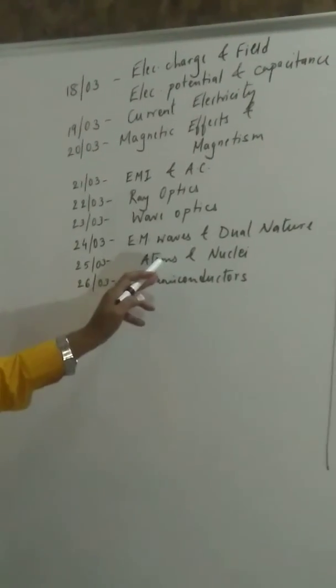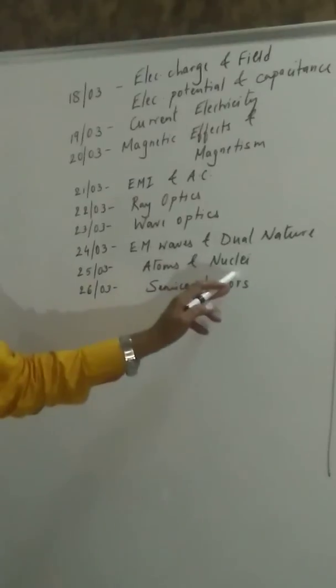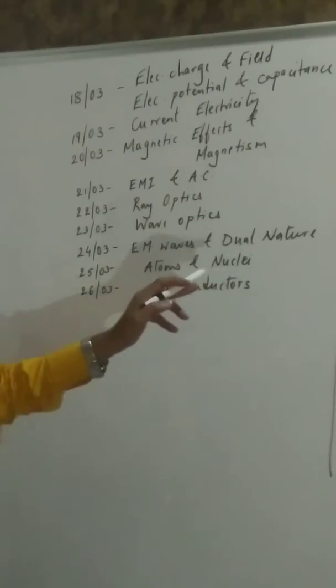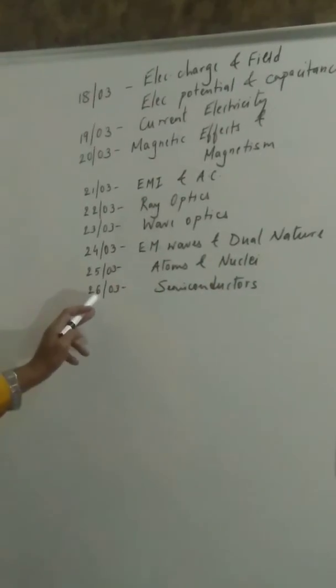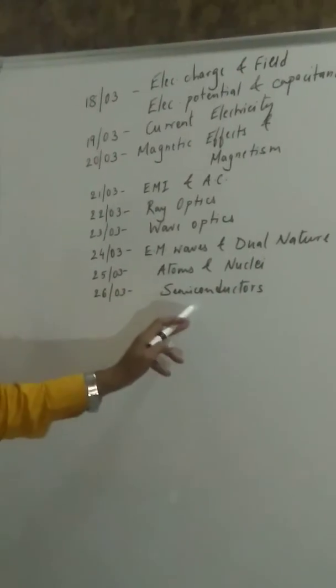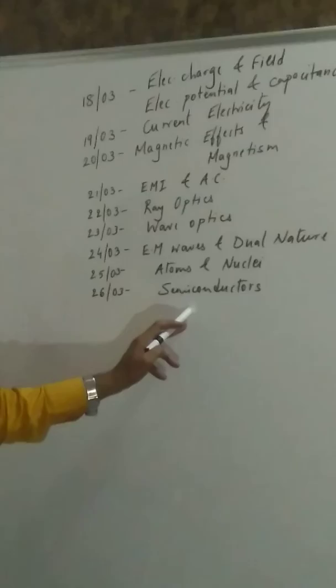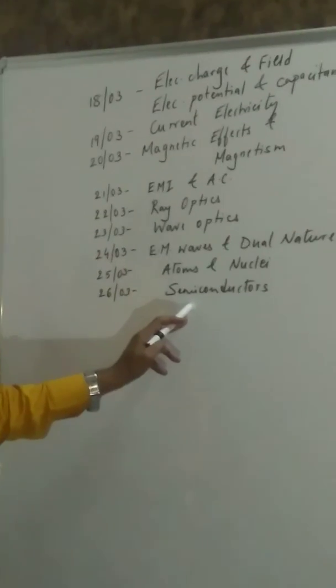On 25th March, is the day for atoms and nuclei, chapters 12 and 13. Finally, on 26th March, we will be looking at chapter 14, which is semiconductors.